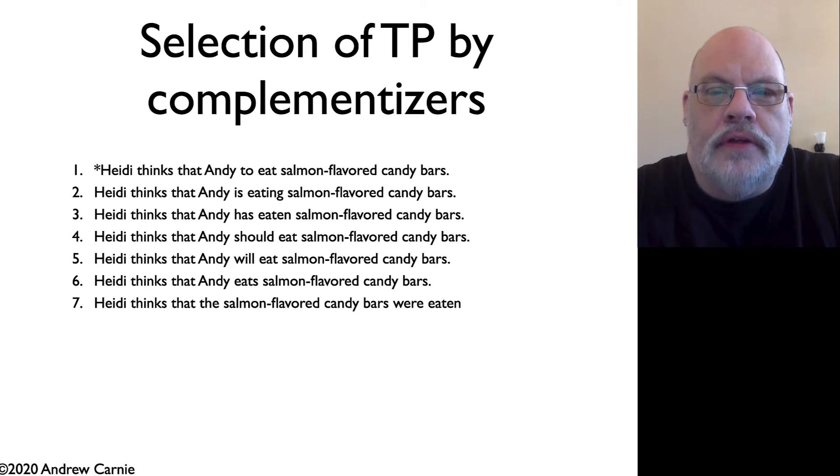Okay, let's now move on to a case where we're looking at where complementizers do the selection. So they choose the kind of TP that follows. First of all, we can note with sentence number one, that the complementizer 'that' takes any kind of embedded clause. It doesn't care whether it's progressive, present tense, past tense, passive, but it does not allow non-finite clauses. So Heidi thinks that Andy to eat the salmon flavored candy bars is not grammatical, whereas all the other forms are.